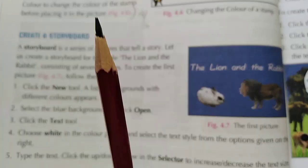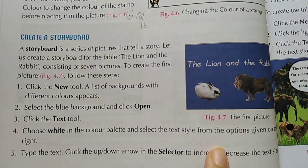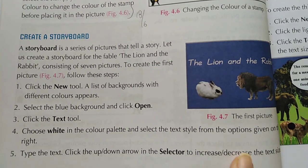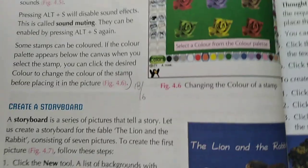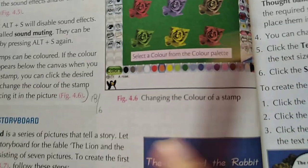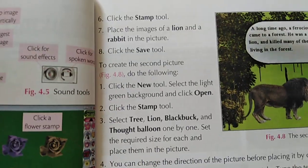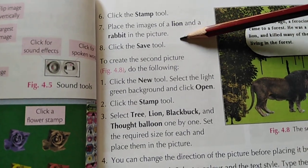You can select the style and color from the color palette. You can also increase the size of the text from the selector pane which is given here. Then to add the pictures, click on the Stamp tool. Place the images of lion and rabbit in the picture.